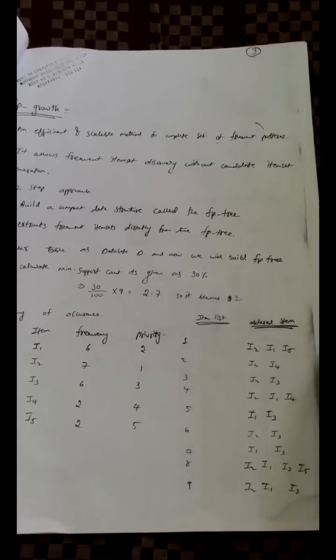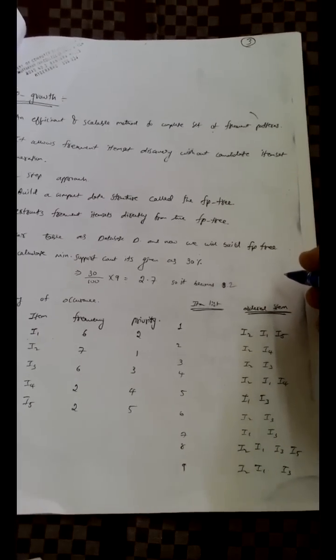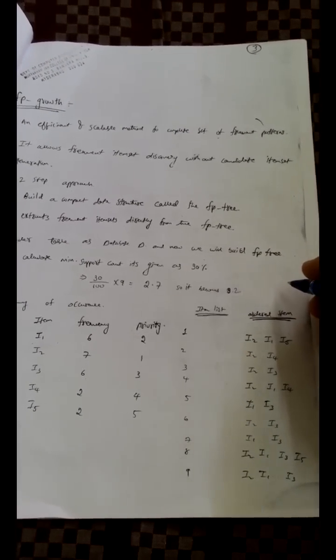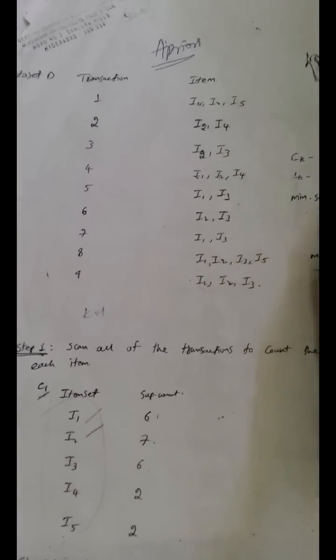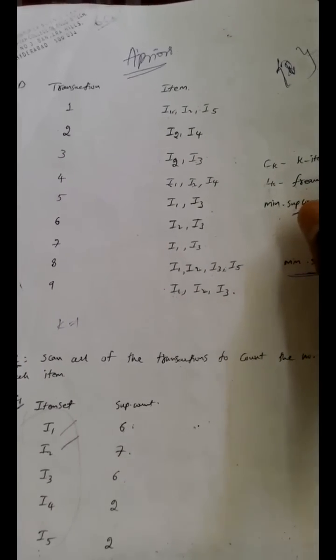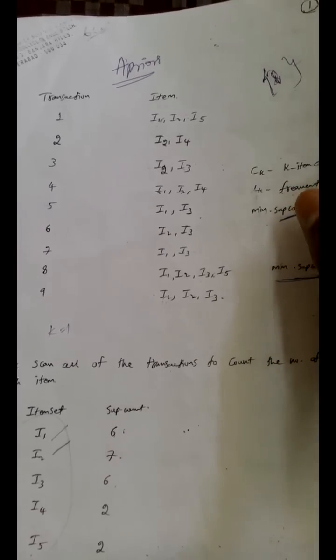Bismillahirrahmanirrahim. Assalamu alaikum warahmatullahi wabarakatuh. Now we will be looking at the FP Growth algorithm for finding the frequent item sets. Initially, like the Apriori algorithm, we will be given a dataset. Here is the dataset which we have considered for the Apriori algorithm as well. The dataset D has 9 transactions from T1 to T9, each using items from i1 to i5.